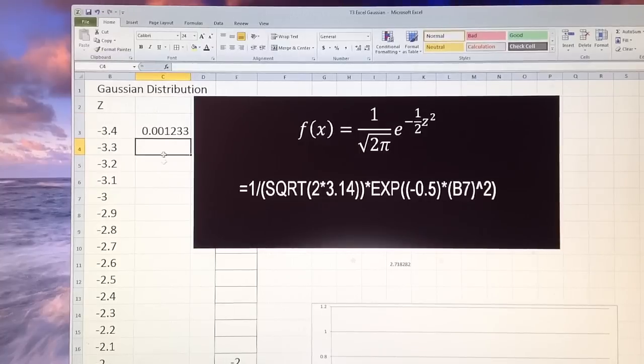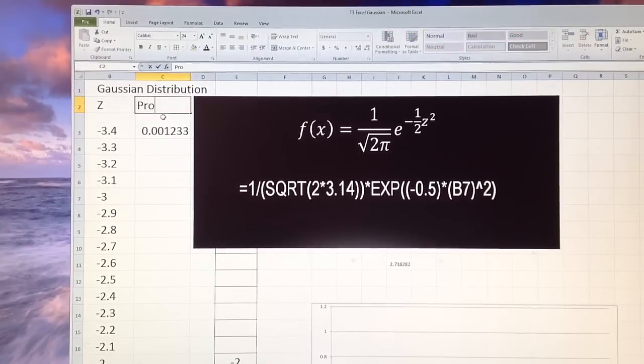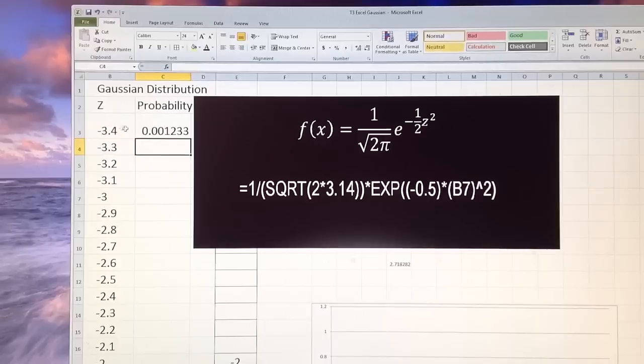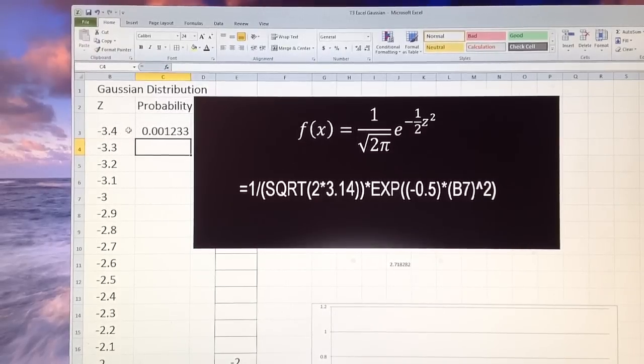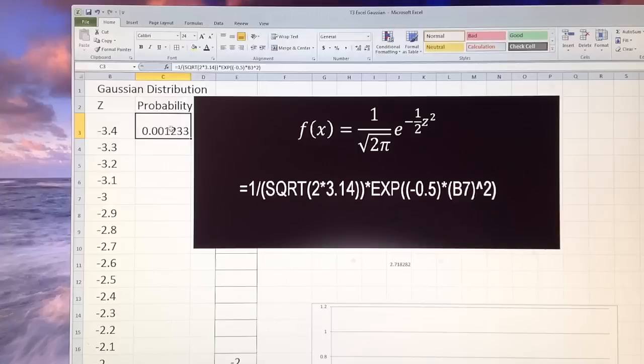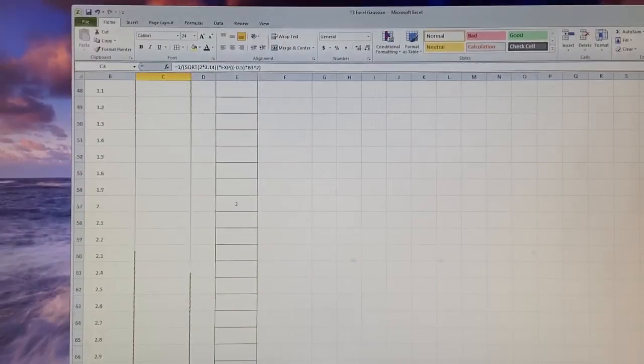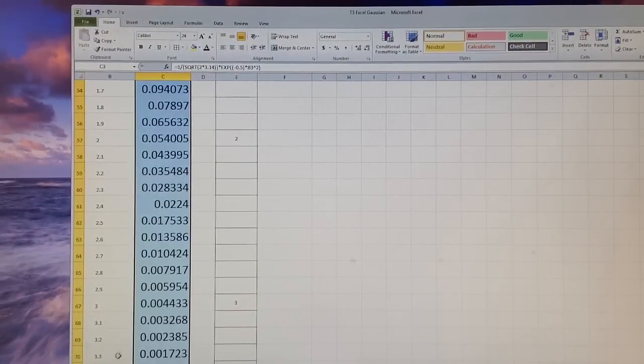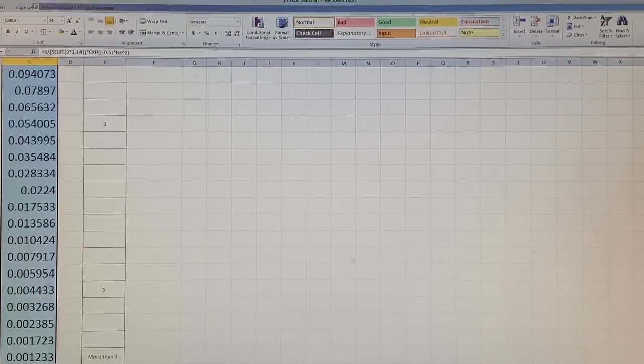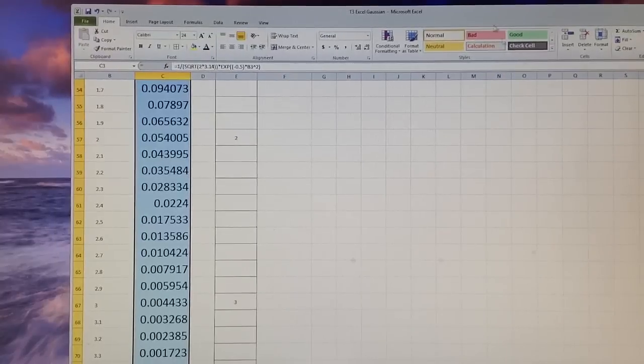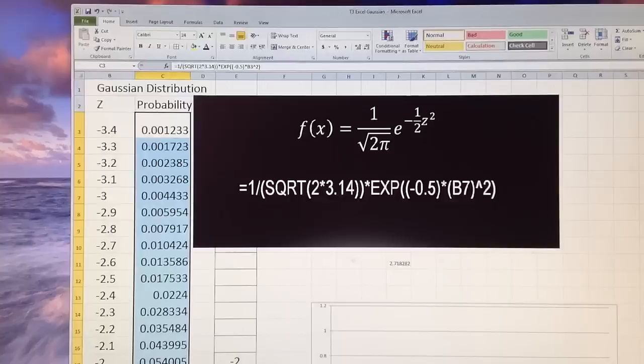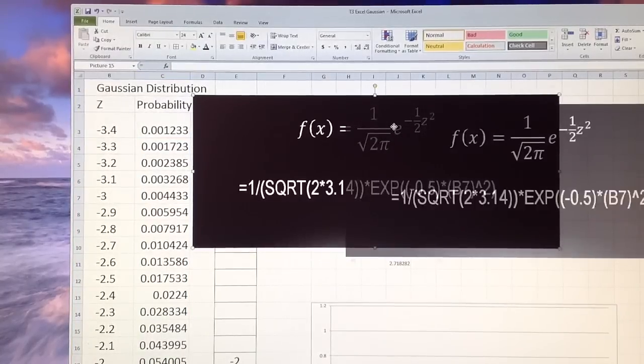And this is my probability that a randomly selected person will have z value negative 3, a little bit more or less negative 3. And I will copy this formula to go from negative 3 to positive 3. Because if you remember, normal distribution is... So these are the probabilities.